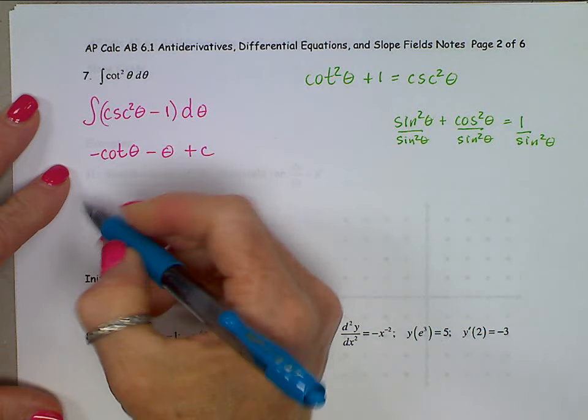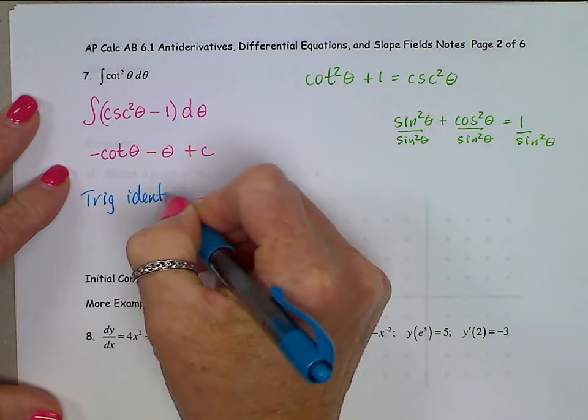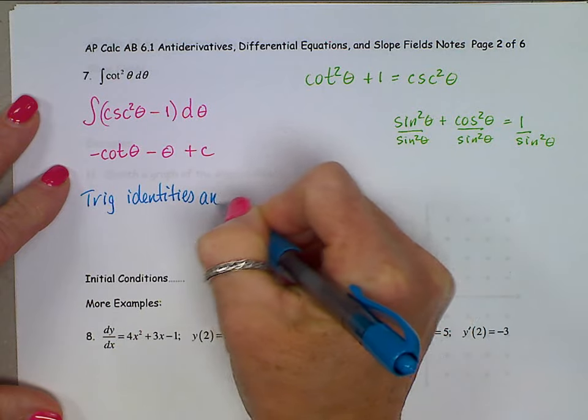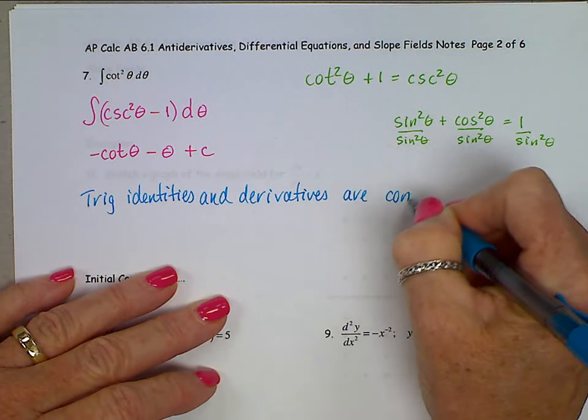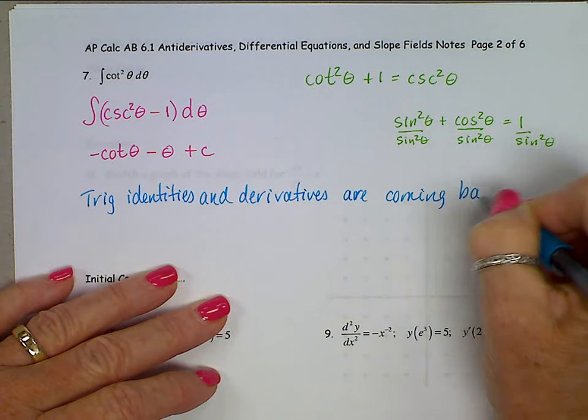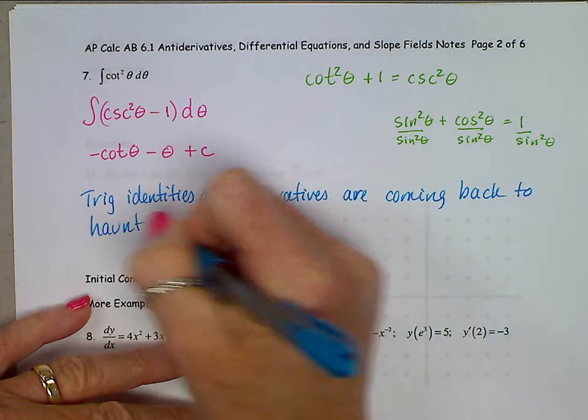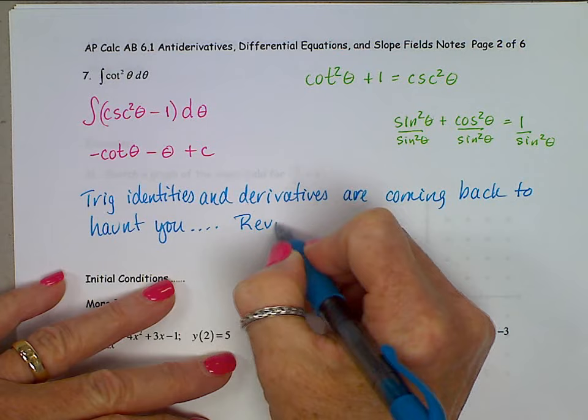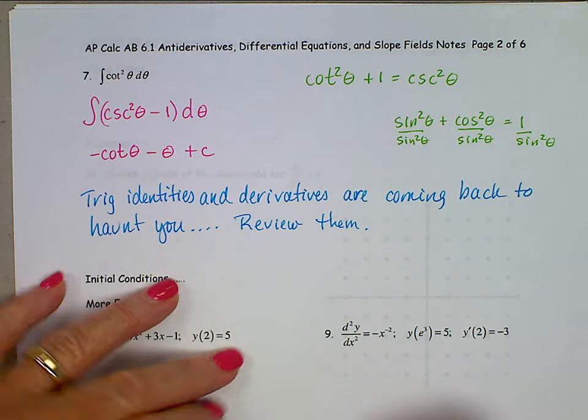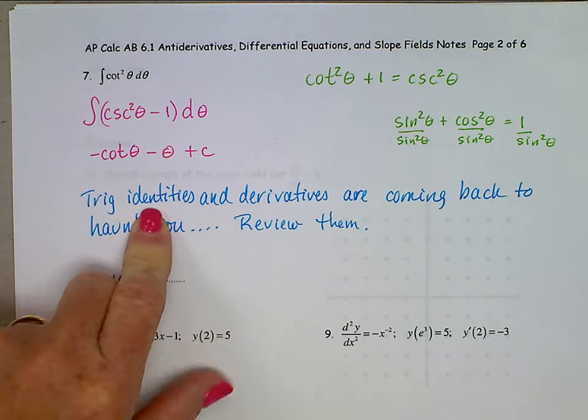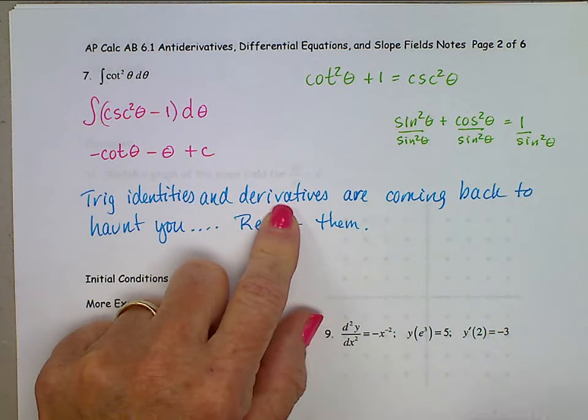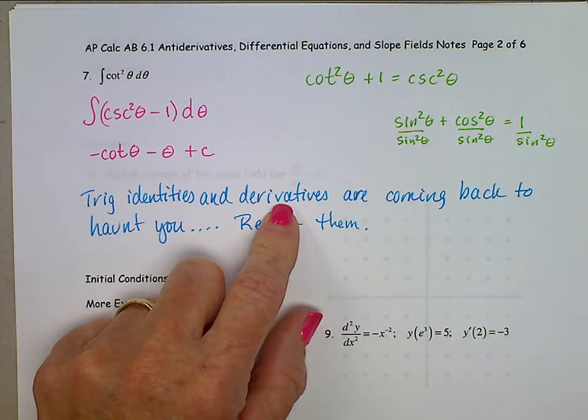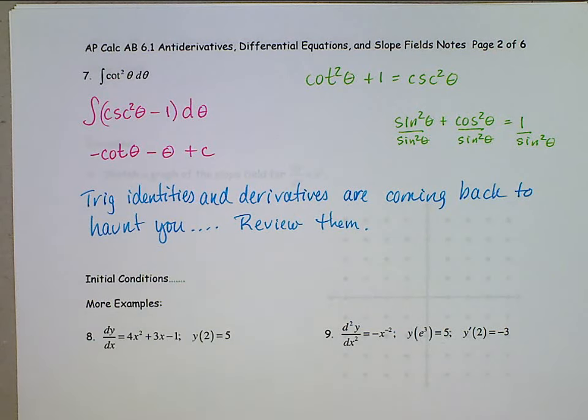All right, I do want to caution you here that the trig identities and derivatives are coming back to haunt you. You need to review them. The trig identities are in section 1.6. That was in your summer packet that we went over way back in August of 2016. Derivatives. Chapter 3, but also in the middle of Chapter 5, we gave you the opportunity to pick up that sheet again, that listed all of the trig functions and their derivatives.